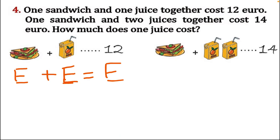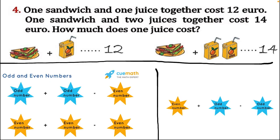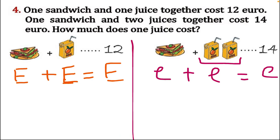Now we apply this: we use E for even. Since 12 and 14 are both even numbers, both the burger and juice prices must combine to give even results. Even plus even gives even, and odd plus odd also gives even. Since we need both juice packets to have the same value, we check which combinations work. If we add even numbers we always get even, and both 12 and 14 are even, so we use even numbers.